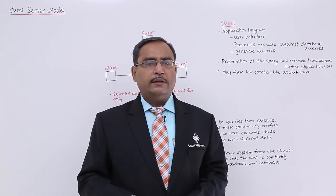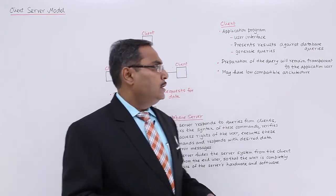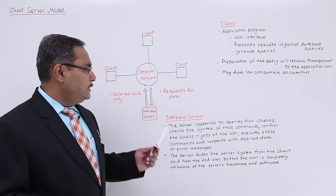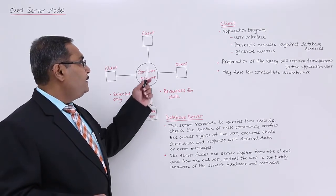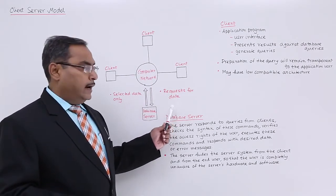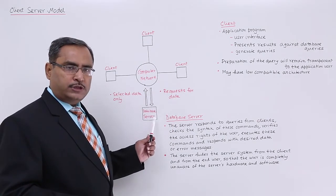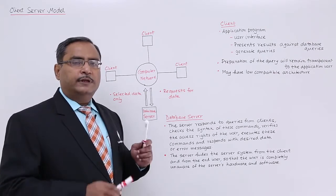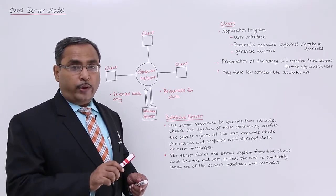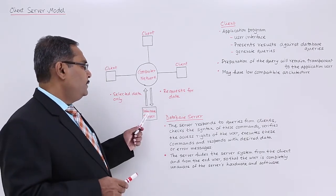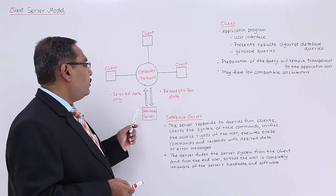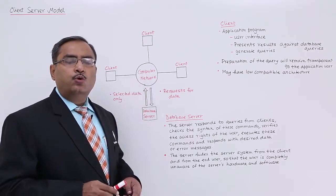Looking at the diagram: the computer network connects multiple client machines to the database server. From the client, queries are generated requesting data. The query is processed at the server end after checking all issues — whether the user is authentic to issue such queries or not. Then the database produces the query output, and the selected data is made available to the respective client who was the query generator.